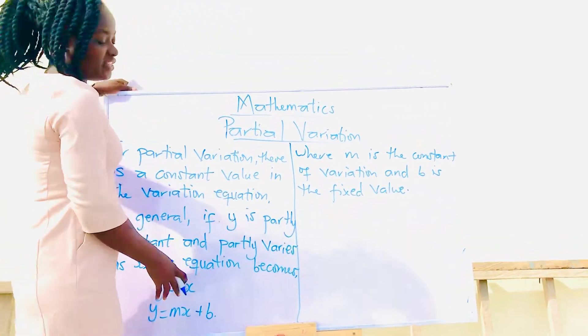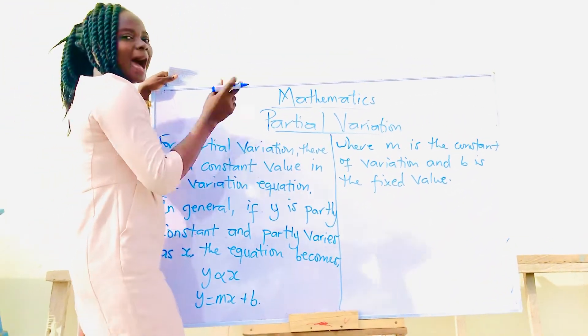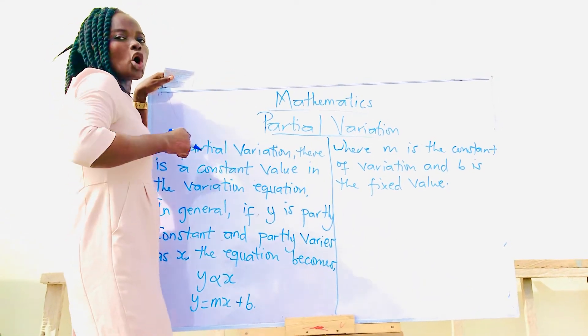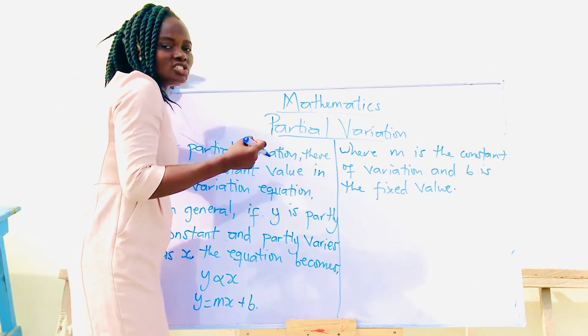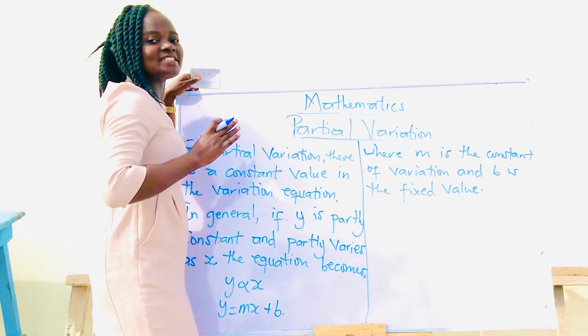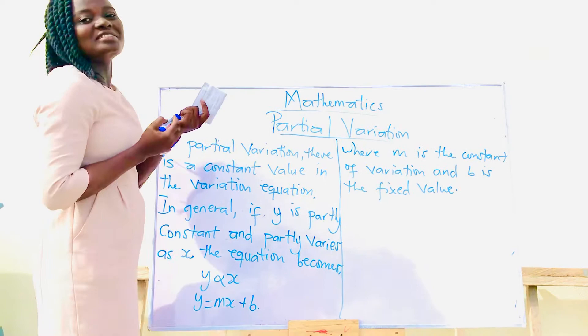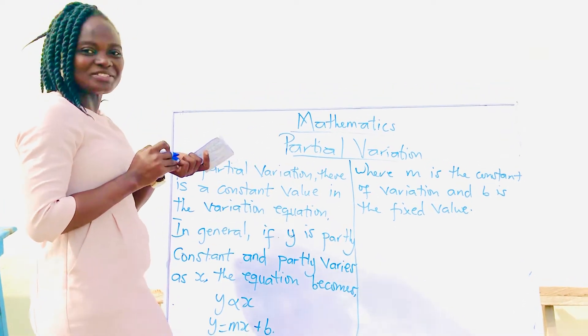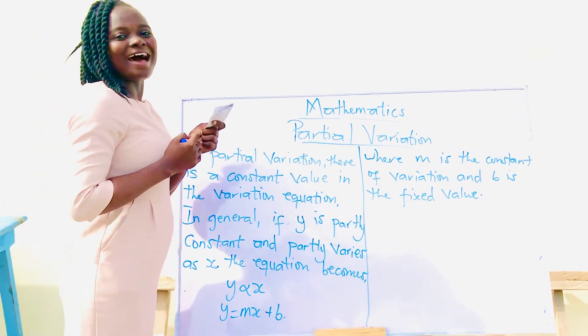In this equation, our m becomes the constant of variation, and our b becomes our fixed value. So I'm going to say a riddle. Listen to the riddle and make an analysis.